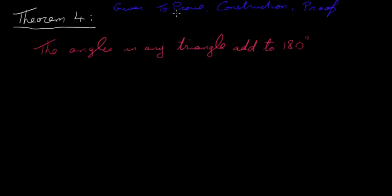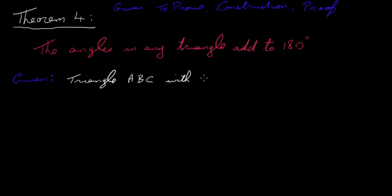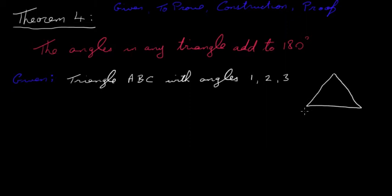The headings are: given, to prove, construction, and proof. The first thing is to write down what we're given. We're given a triangle with vertices A, B, and C, and it has three angles which we'll call angles 1, 2, and 3. We're also given a diagram of this triangle.